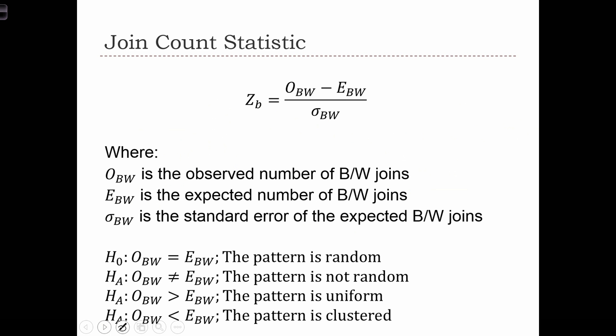That is precisely what we are going to do. We can define a z-test. The z-test is composed of the difference between the observed black-white joins minus the expected black-white joins — this is expected under the null hypothesis that the map is random — divided by the standard error of the expected black-white joins.